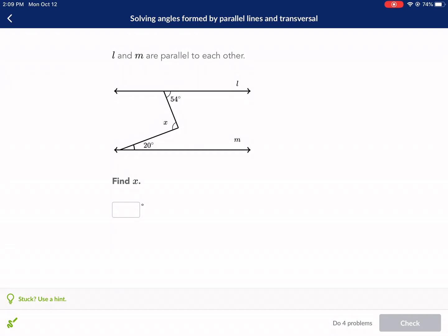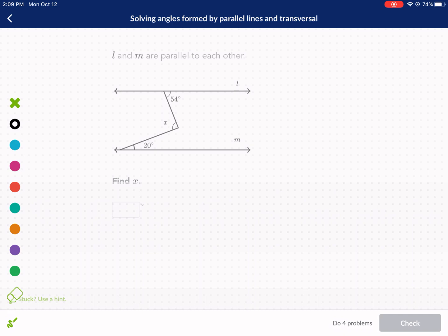It says L and M are parallel to each other. We need to find X. And no, we're not just going to circle it and find it. We need to find the value of X. How many degrees is it? So let's go ahead and break this down.